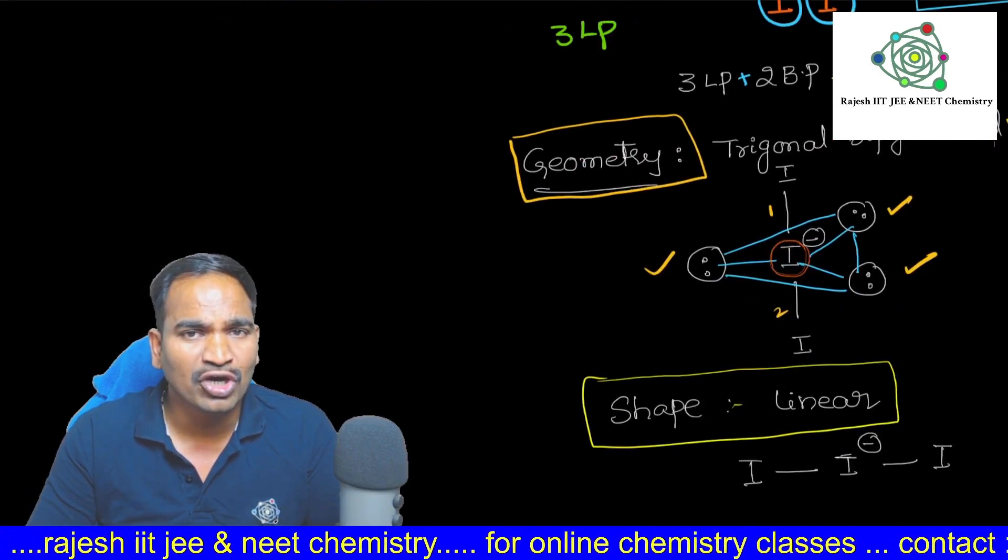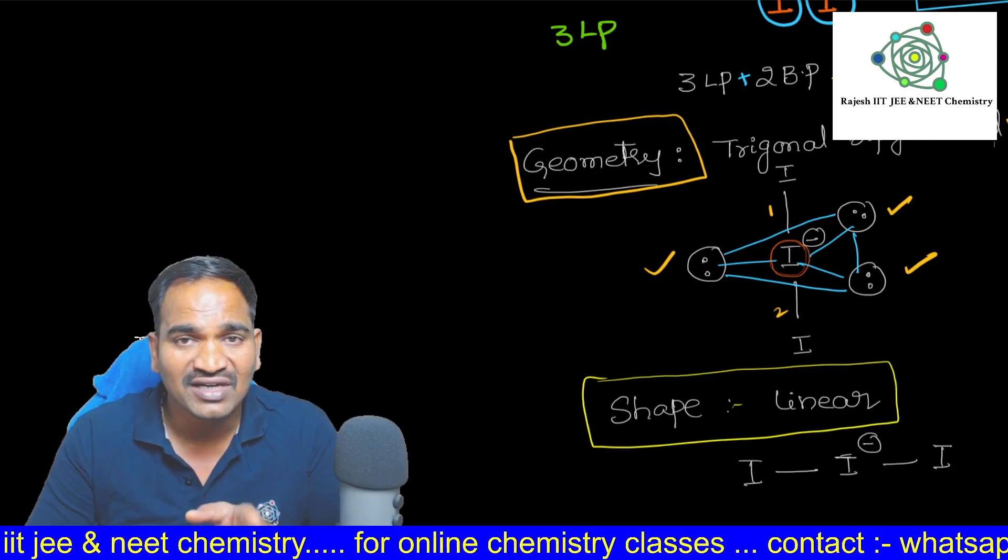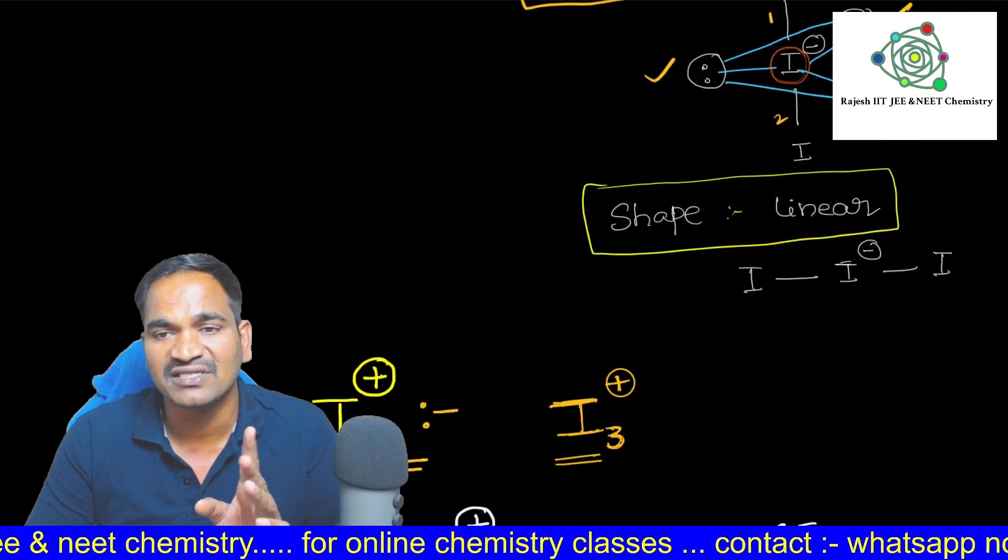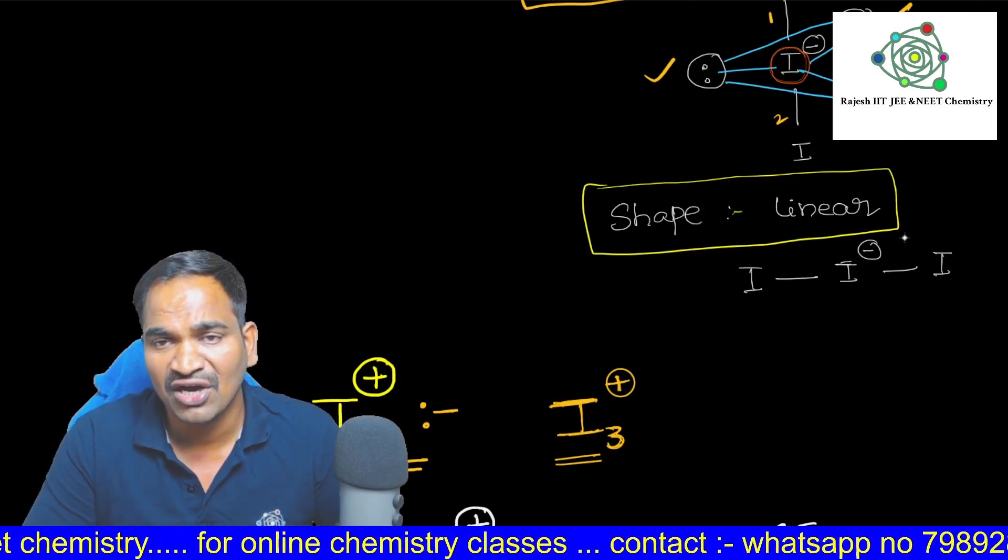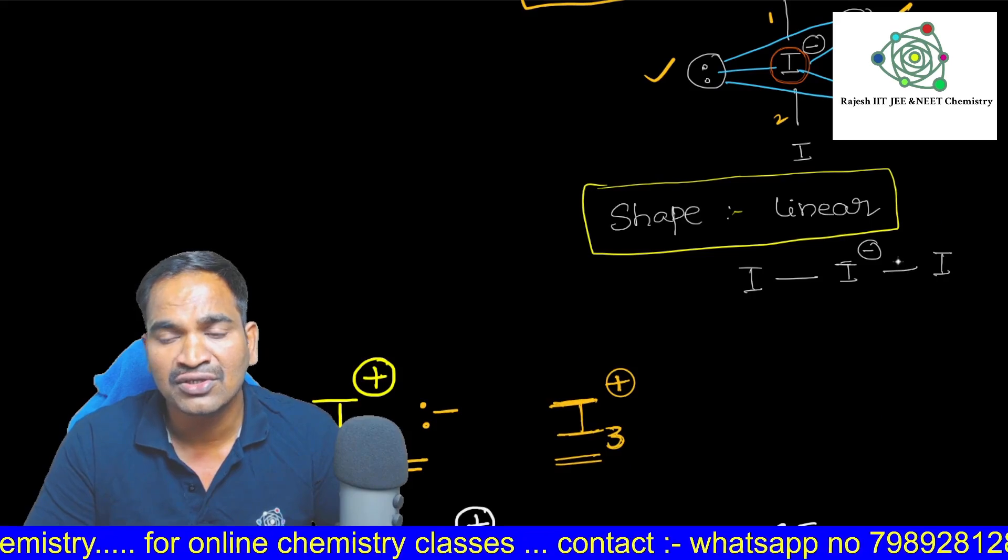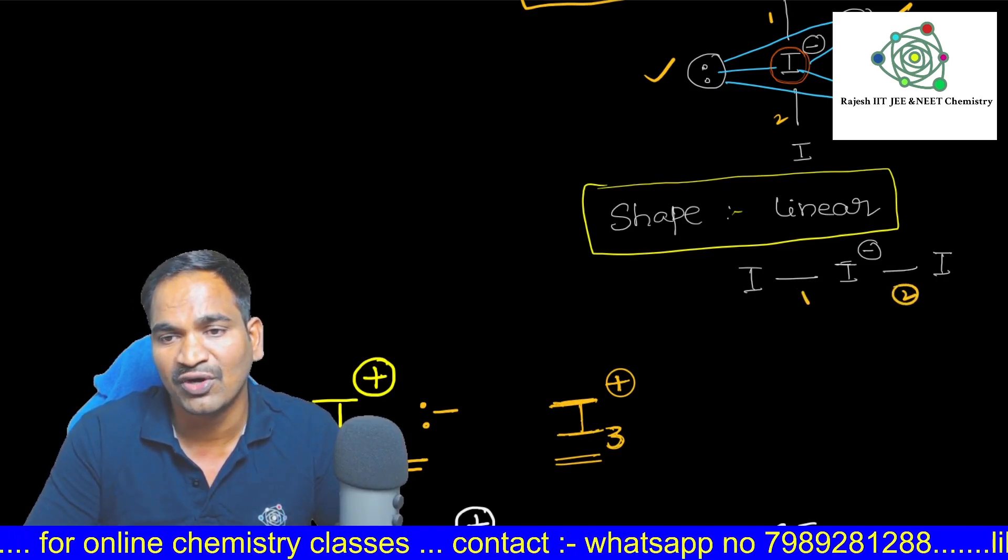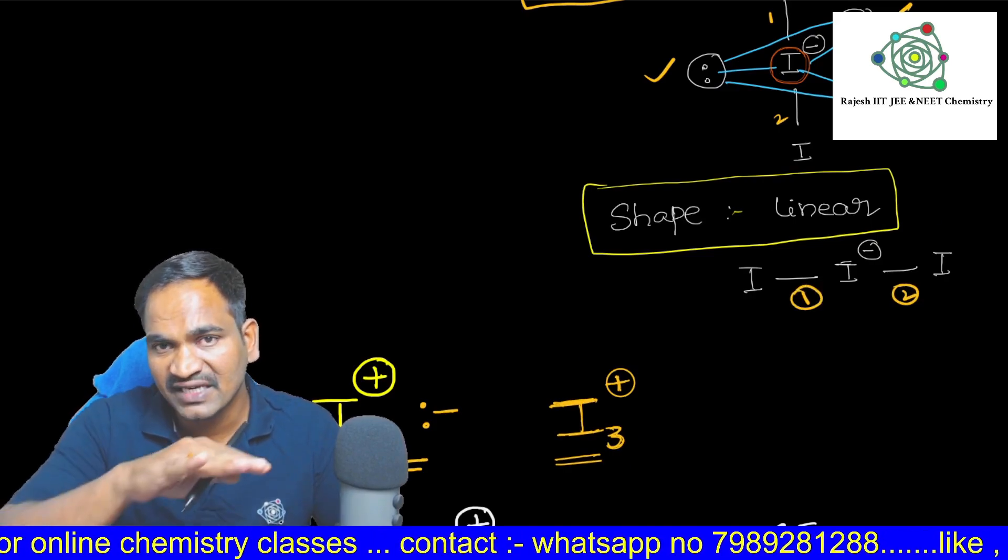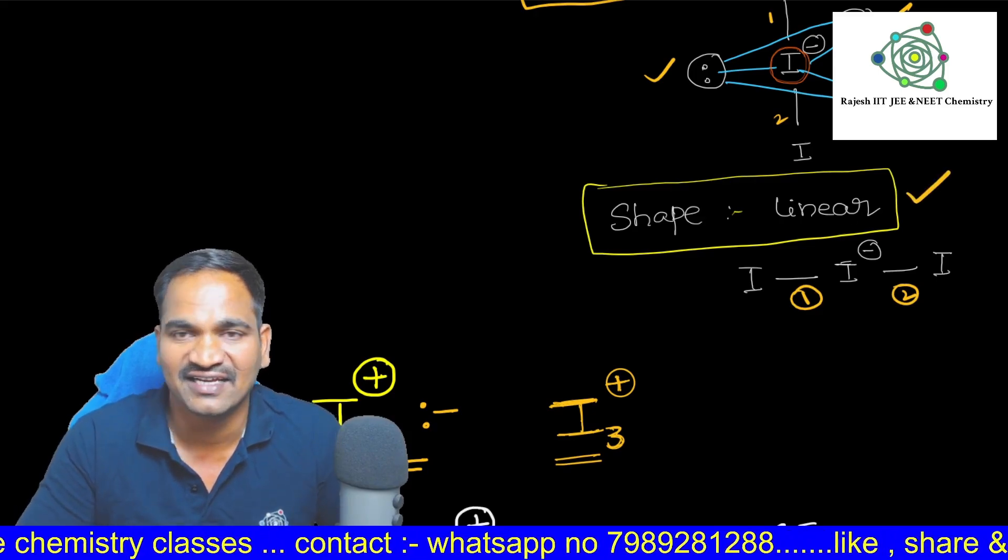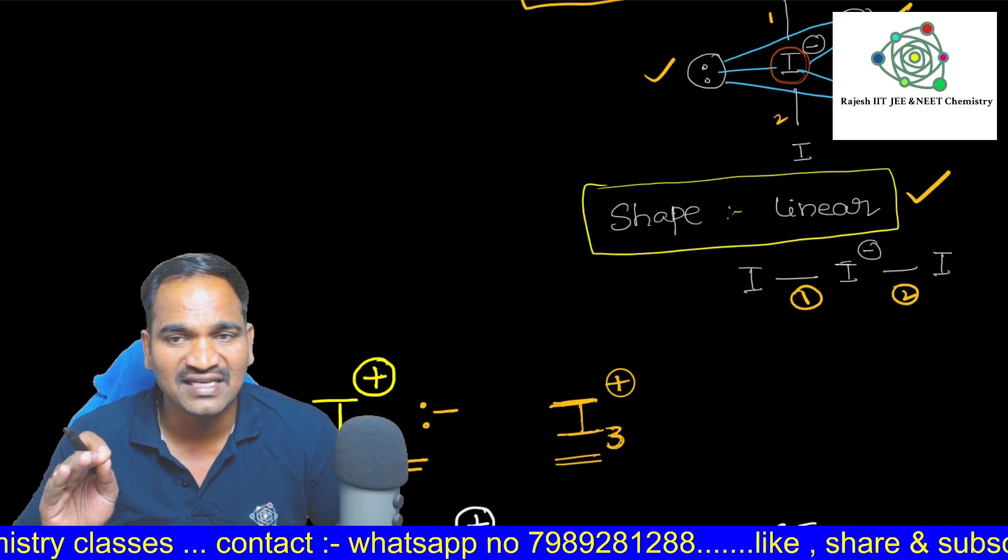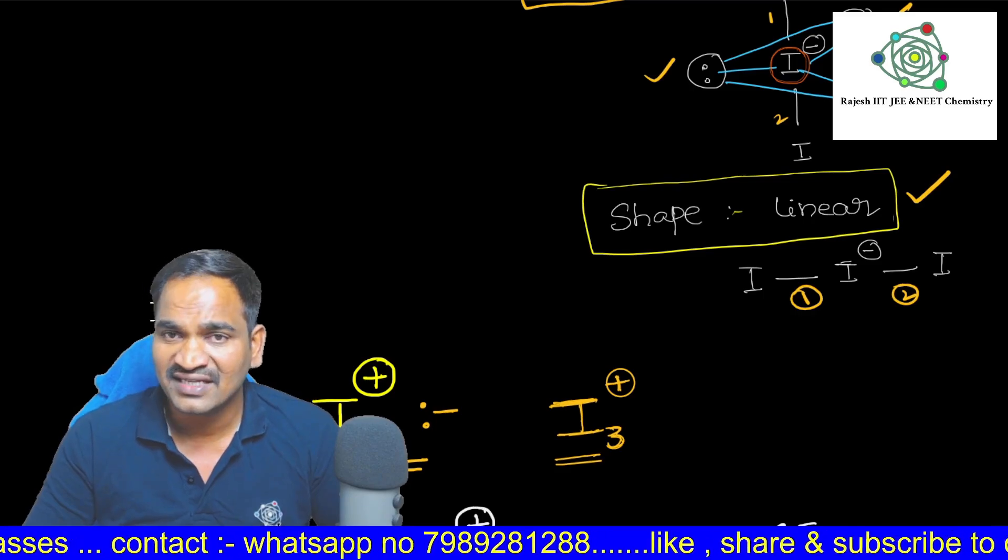But we need to talk about only shape. Shape means what, we should not consider lone pair. Only bond pairs we have to consider. Without consideration of lone pair of electrons, only we need to consider bond pair. This is one and two bond pairs. So two bond pairs here, the shape we have to take it as linear. Shape is linear. Geometry is trigonal bipyramidal.